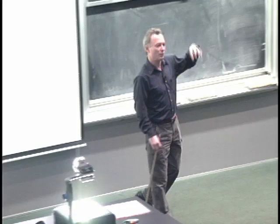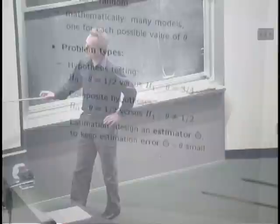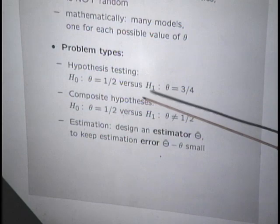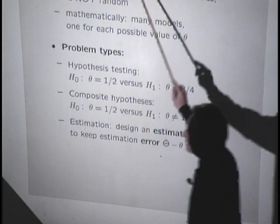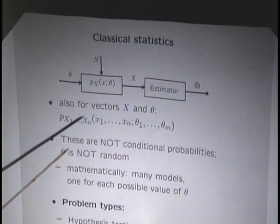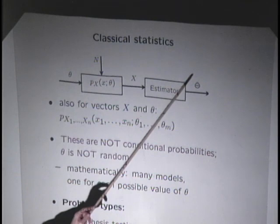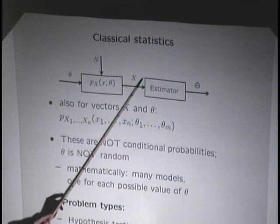There are systematic ways to approach problems of this kind, and we will start talking about these next time. Today we focus on estimation problems where theta is a real number, a continuous parameter. We design a box — what we get out is an estimate. Notice that this estimate is a random variable. Even though theta is deterministic, the estimate is random because it's a function of the data that we observe, and the data are random. Since it's a function of random variables, it's a random variable itself.